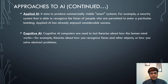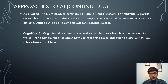Applied AI has already enjoyed considerable success. The fourth approach is cognitive AI, where computers are used to test theories about how the human mind works — for example, theories about how you recognize faces and other objects, or how you solve abstract problems. Cognitive AI computers basically reenact human behavior to test those theories.